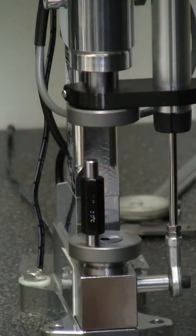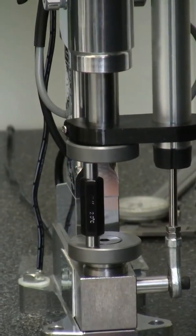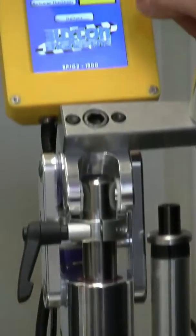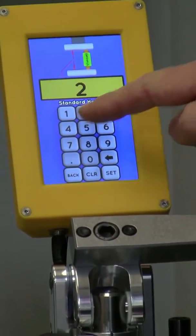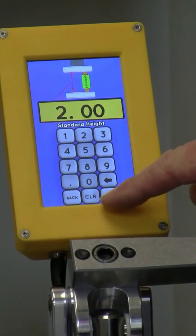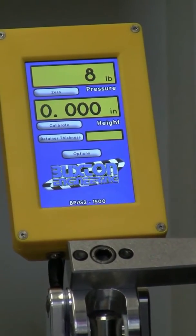Height setup is easily done with a micrometer standard or basically any parallel object of a known height. Insert the standard and press the height calibration button. From there just type in the standard length and press the set button and your height calibration is now complete.